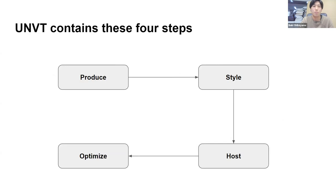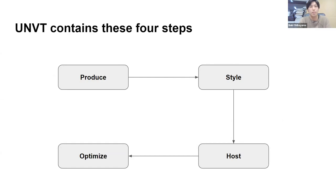UNVT does not cover a physical form. It is a methodological pathway developed by the United Nations to spread the use of vector tiles around the world. This guideline includes four steps: first, produce vector tiles; second, style it into the form of a map; third, host the map so it can be viewed in a browser; and fourth, optimize it to make it better. A cycle of these steps ensures vector tiles are continuously utilized and improved.